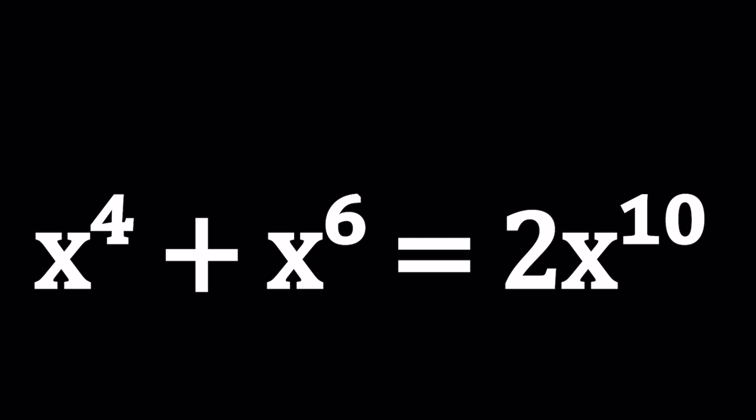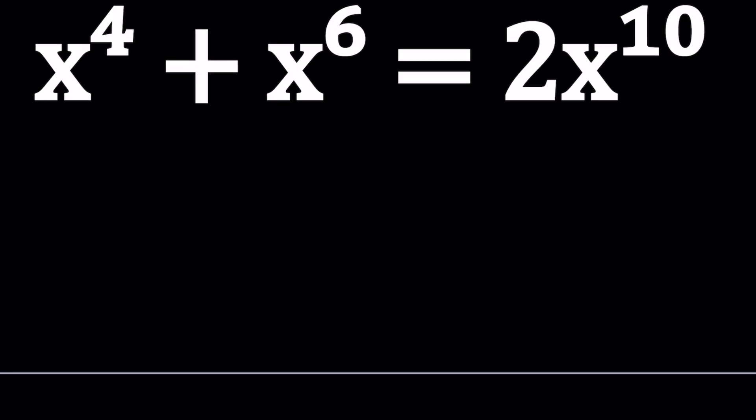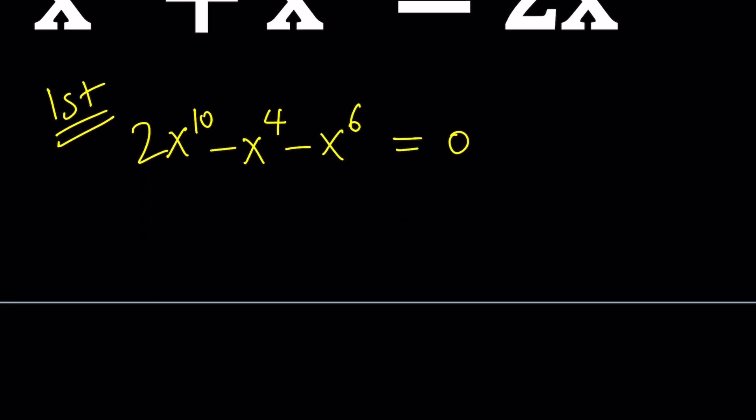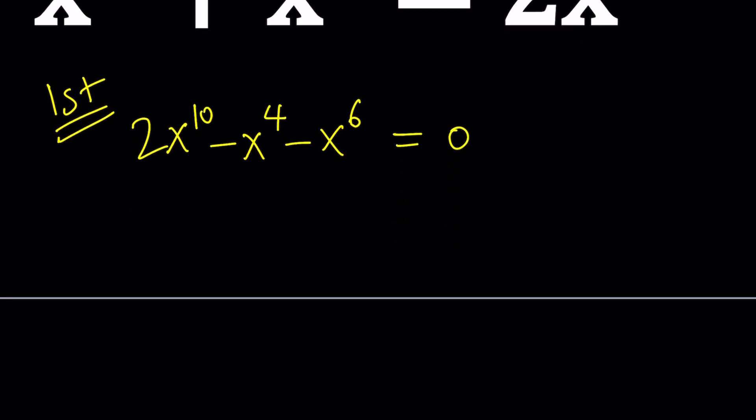I'll be presenting two methods and let's start with the first one. So for my first method, I'd like to put everything on the same side. Let's go ahead and put everything on the right-hand side by subtracting x to the 4 plus x to the 6, setting it equal to 0, and then splitting up the x to the 10 into x to the 10 plus x to the 10.